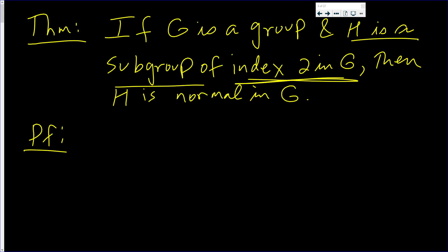Well, that means it has exactly two right cosets and exactly two left cosets. The union of these two right cosets will be G, and the union of the two left cosets will be G.